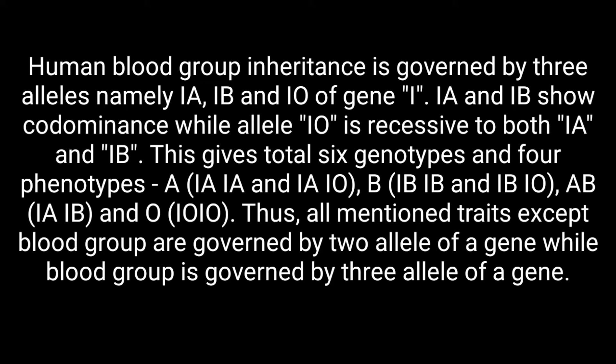Human blood group inheritance is governed by three alleles — IA, IB, and IO — of gene I. IA and IB show co-dominance, while allele IO is recessive to both IA and IB. This gives a total of six genotypes and four phenotypes: A (IAIA and IAIO), B (IBIB and IBIO).